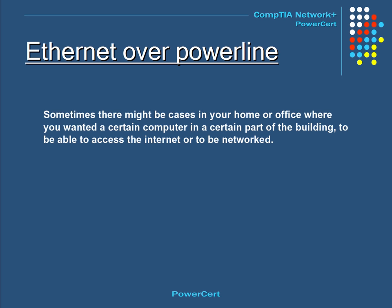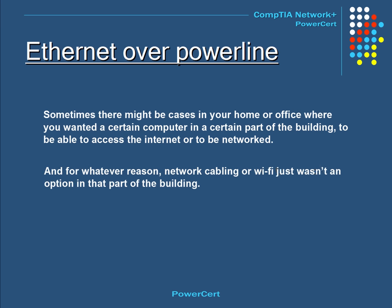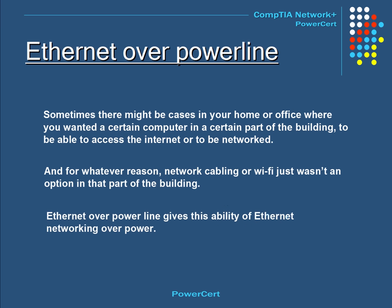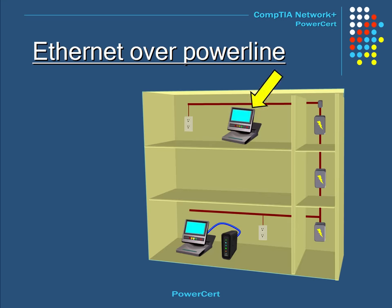Sometimes there might be cases in your home or office where you want a certain computer to access the internet, but network cabling or Wi-Fi is not an option due to difficulties in the building structure or interference. Another 1901 standard gives the ability to network using the existing electrical system of the building — this is called Ethernet over Power Line.